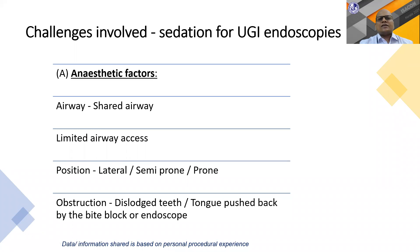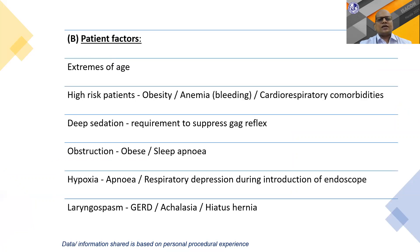Giving sedation or anesthesia in the endoscopy room is not without challenges. Anesthetic factors include a shared airway with limited access, and obstruction of the airway by dislodged teeth, the tongue being pushed back by the bite block, or by the endoscope itself. Patient factors include extremes of age, obesity, anemia, bleeding, and cardiorespiratory comorbidities.